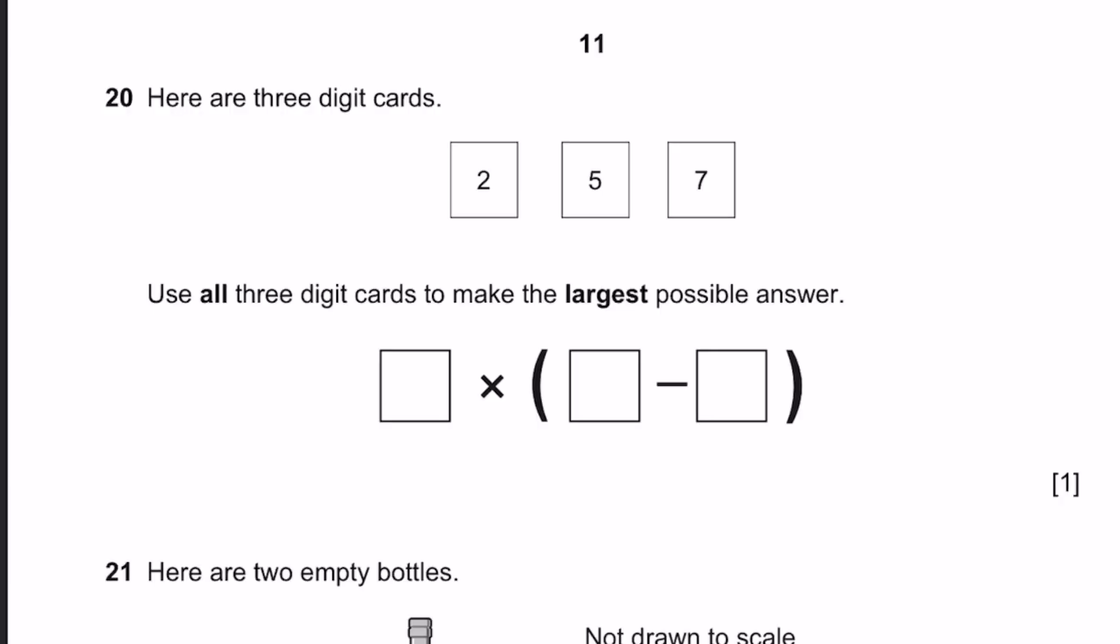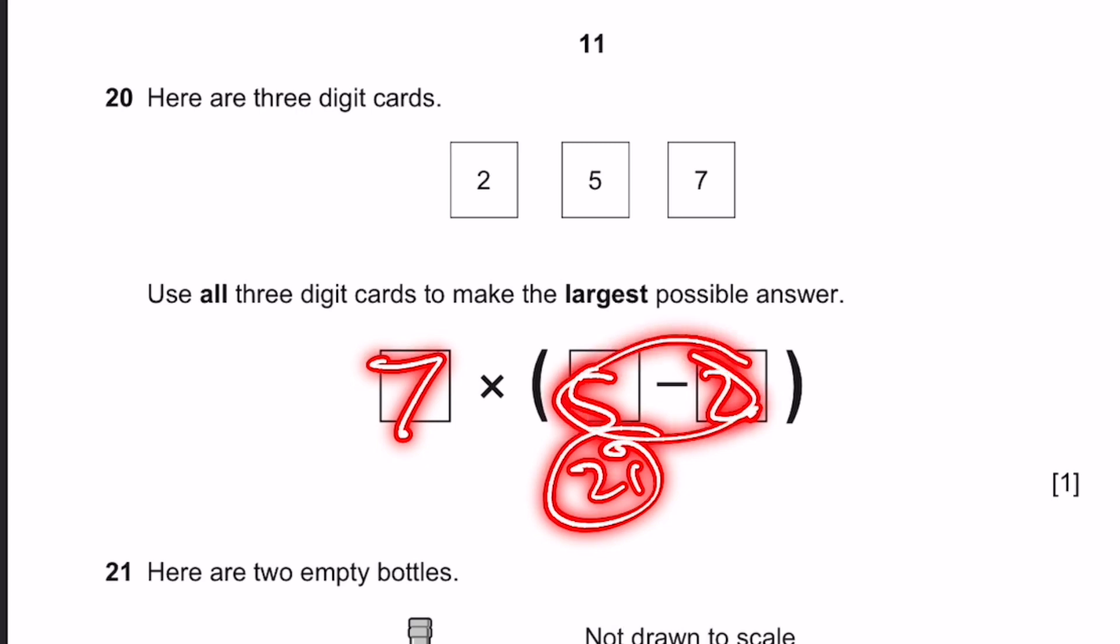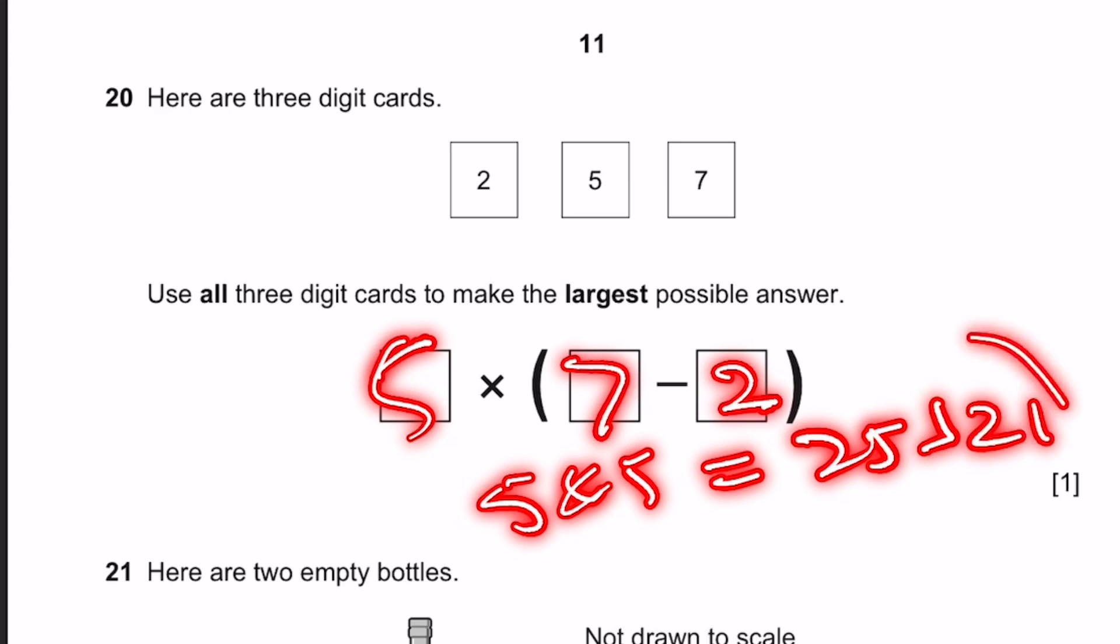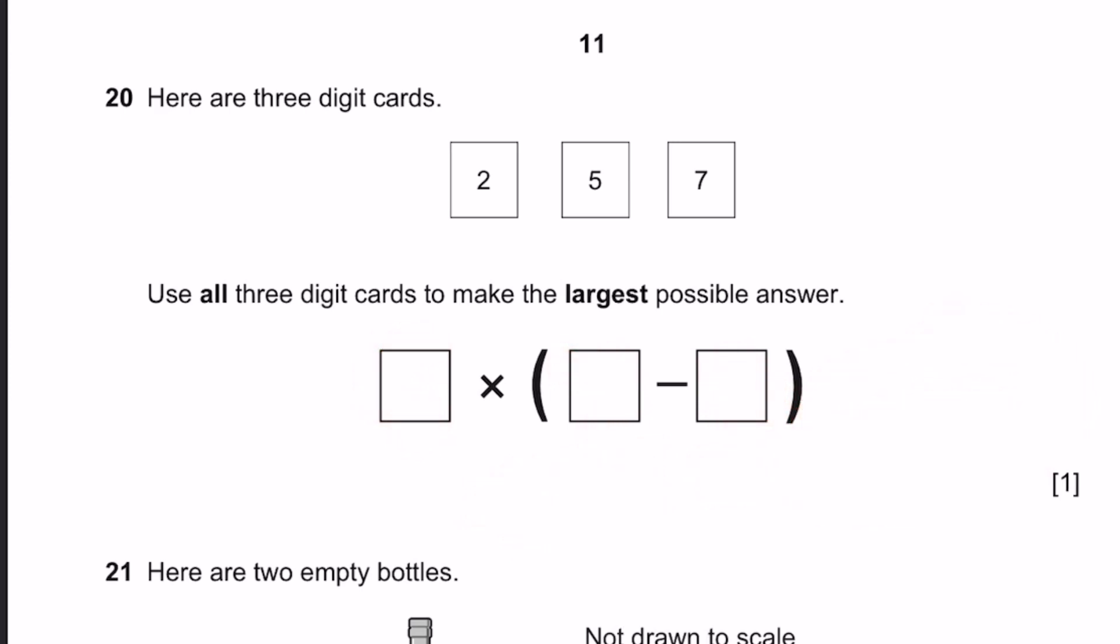Question 20. Here are 3 digit cards: 2, 5, 7. Use all three to make the largest possible answer: blank times blank minus blank. So we need to make this as large as possible. If this is large as possible 7, then 5 minus 2, this becomes 21. Now if you put 5 here, that means 7 minus 2, so 5 times 5 is 25 which is greater than 21. So 25 is the largest possible answer, which is 5 times 7 minus 2. You can try any other number combinations, it still won't be this large.